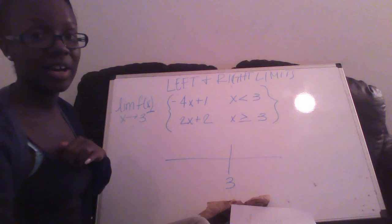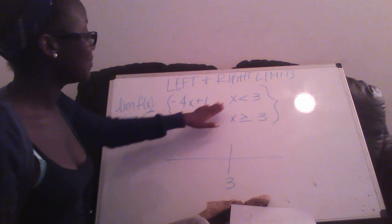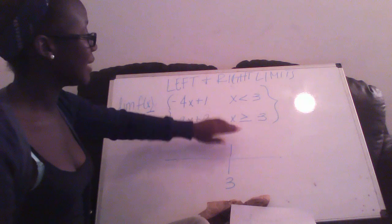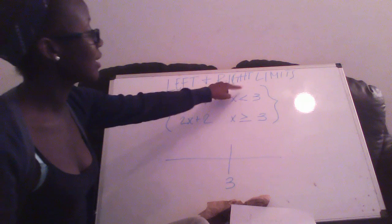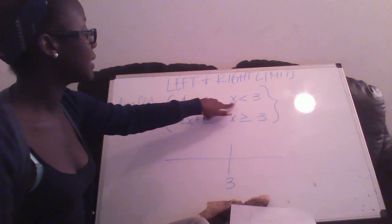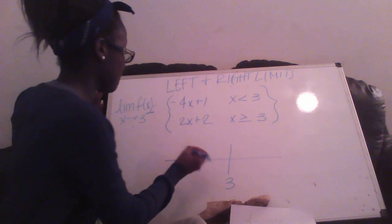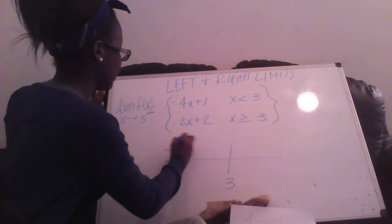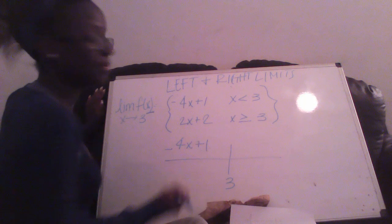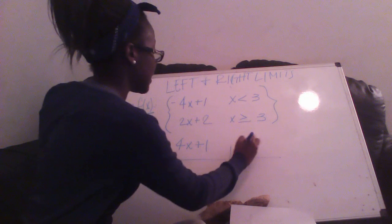But now, you have to figure out if it's approaching from the left or the right side. So we look at our symbols here. If a number is less than 3, it's on the left side. So we would put -4x + 1. And then this one is greater than or equal to 3, so it's on the right side: 2x + 2.